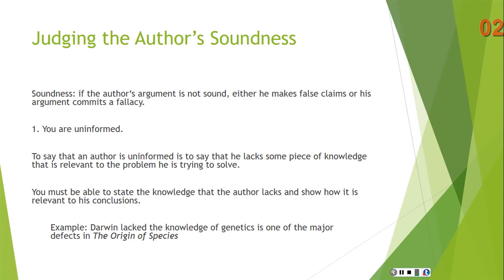Here's an example: Charles Darwin lacked the knowledge of genetics, and this is one of the major defects in The Origin of Species. This is not a criticism of evolution — it is just a criticism of the book. If Darwin had knowledge of genetics, he would have been able to solve the problems he approached in the book more accurately. Of course, we can do evolutionary biology today with a knowledge of genetics, but since Darwin lacked that knowledge, he was uninformed — and he couldn't help it, because everybody lacked that knowledge at that point.